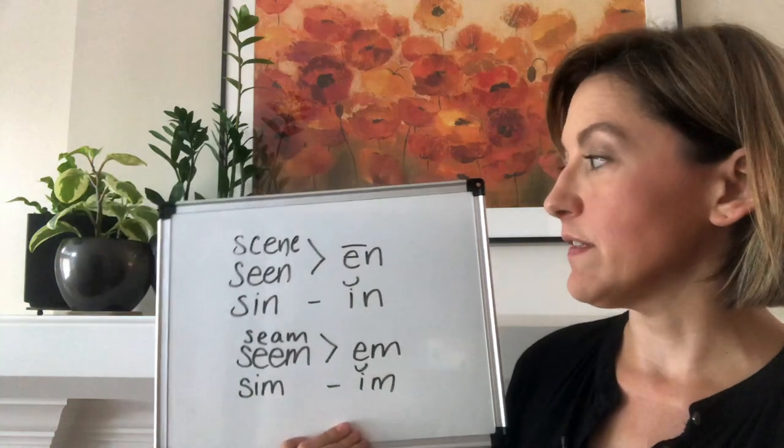The lesson today is about two things: the long E versus the short I sound, and the N versus the M sound at the end of words. So let's look at the word list that we have for today.